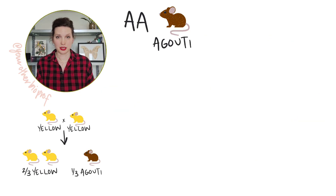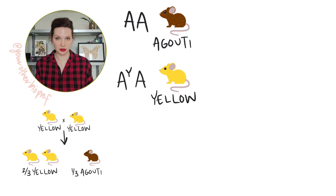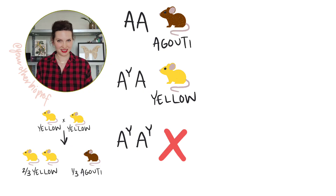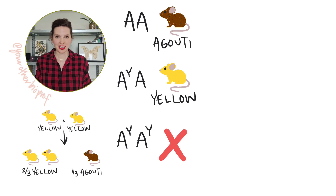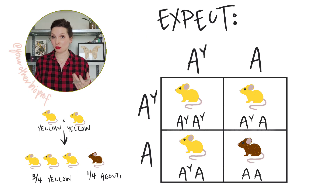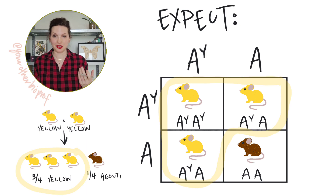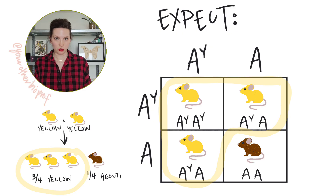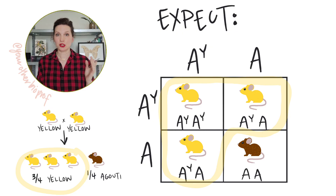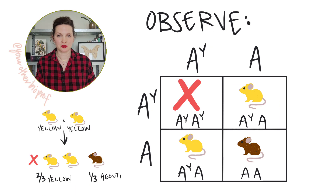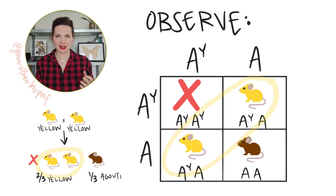Well, the agouti homozygotes are agouti, the heterozygotes are yellow, and the yellow homozygotes are dead. So all the yellow mice are actually heterozygotes. And in a cross between two heterozygotes, you'd expect a three to one ratio of yellow to agouti — three quarters yellow, one quarter agouti. But instead, a two to one ratio is observed: two thirds yellow to one third agouti.